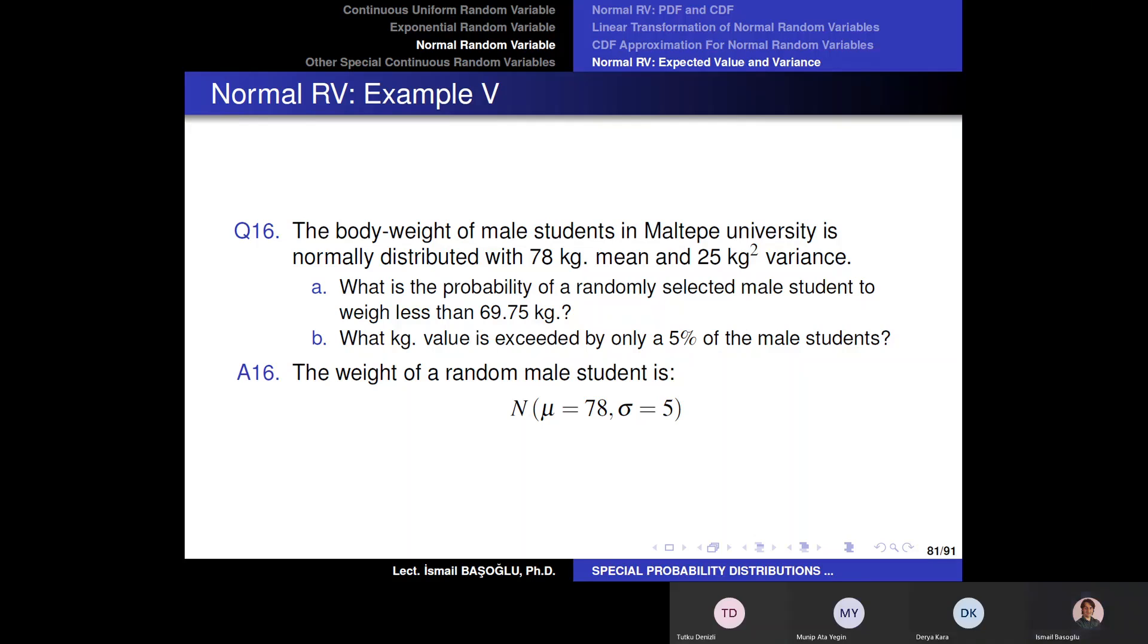In this question, this time we are talking about a normally distributed random variable. However, this time the question does not use the terms of location parameter and scale parameter. Instead, it says the male students in Ozyen University have body weights with an average of 78 kilograms. So 78 kilograms is the average of the weights of male students in Ozyen University.